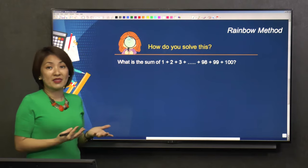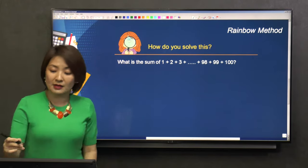So how does the rainbow method work? Basically, this is how it looks like.